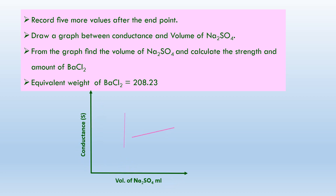Now draw the model graph. The x-axis has the volume of sodium sulphate, the y-axis has conductance. The graph is plotted and the minimum point will be your end point.